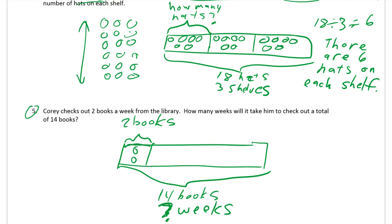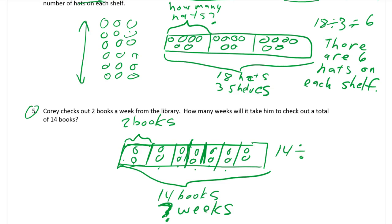Each box represents a week, and we put two books in each. We keep going until we get to fourteen books: two, four, six, eight, ten, twelve, fourteen. That's fourteen. We figured out that fourteen divided by two equals seven.